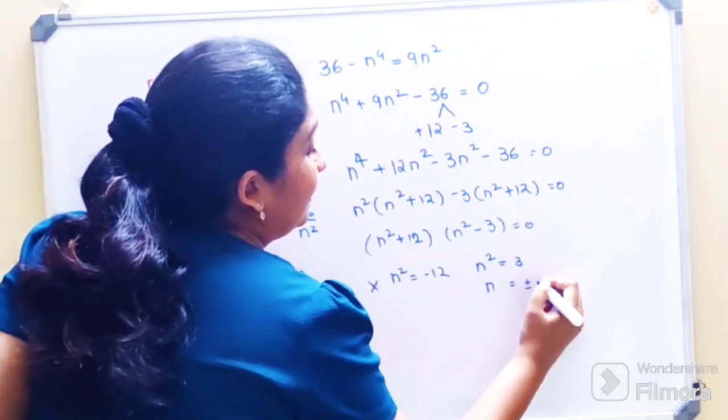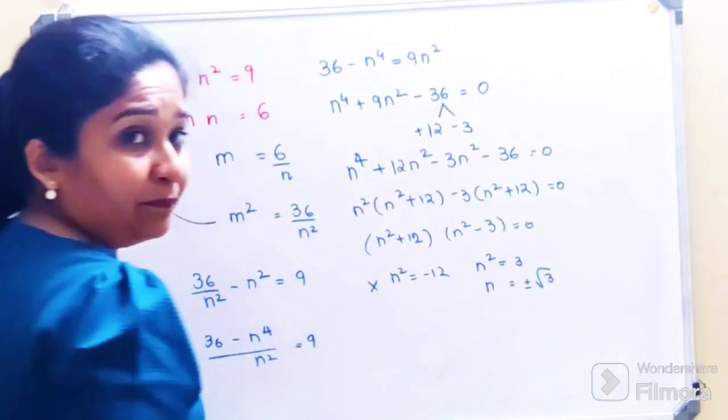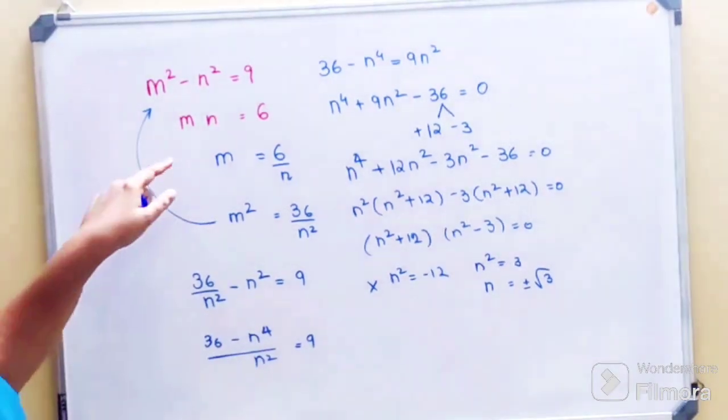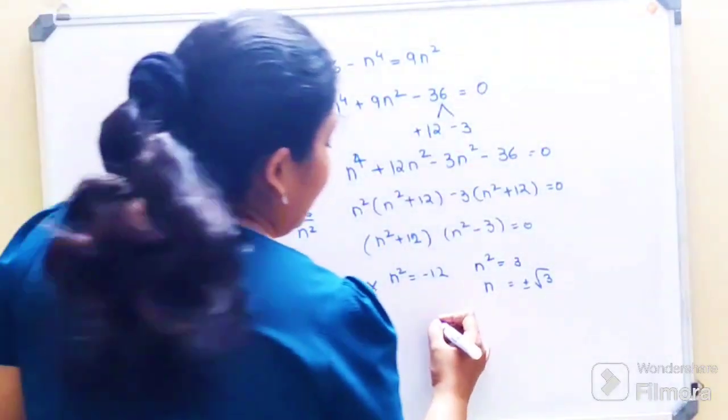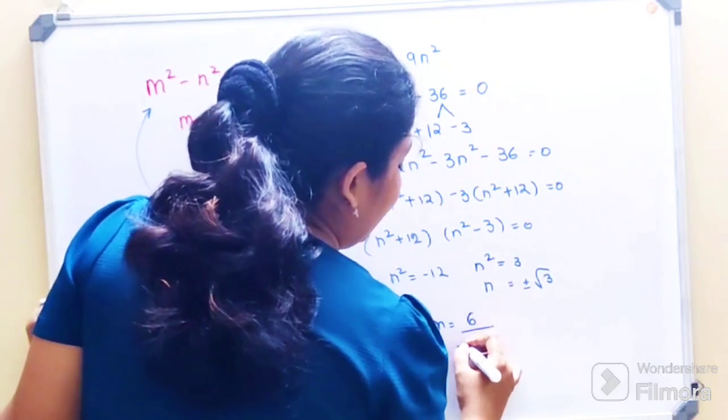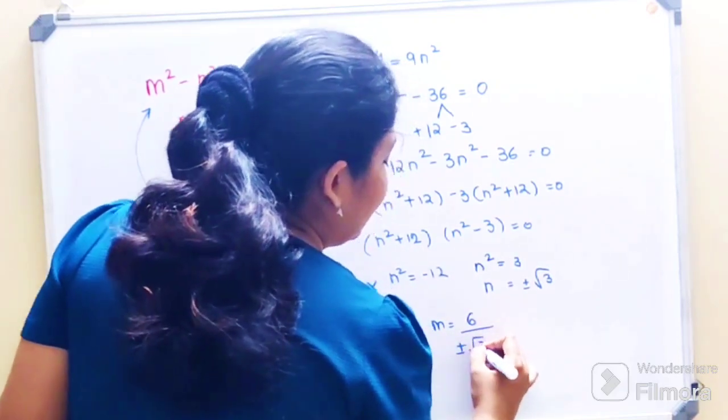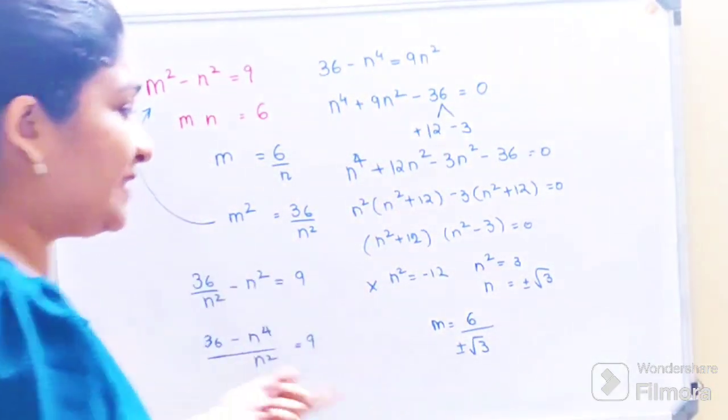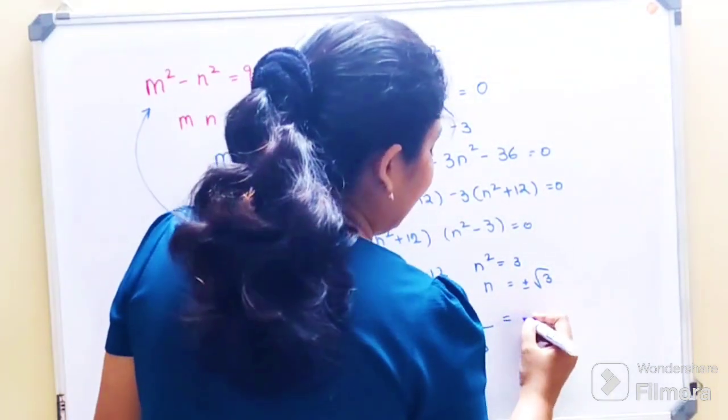Now in order to find the value of m, I can say m is equal to 6 upon plus minus root 3. I can still solve this further.